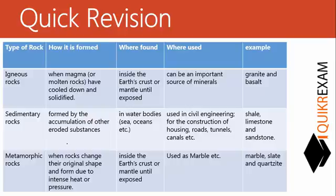Metamorphic rock is used as marble. Examples of igneous rock are granite and basalt; sedimentary rock examples are shale, limestone, and sandstone; metamorphic rock examples are marble, slate, and quartzite. Hope this lecture clarified your concept of the rock cycle. Thanks for watching — please subscribe to our channel for more videos.